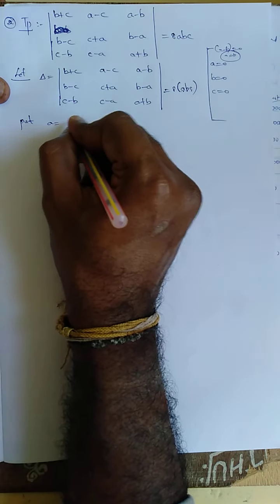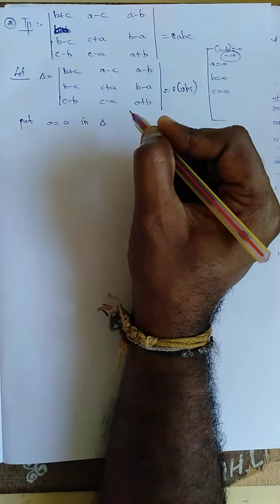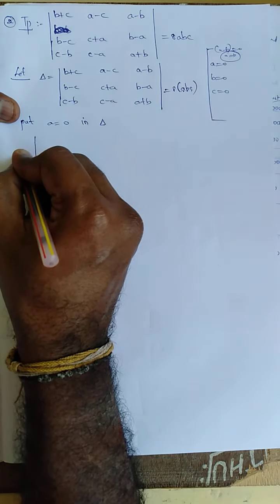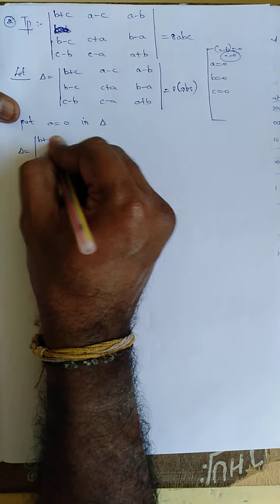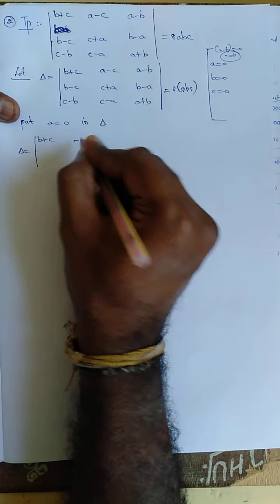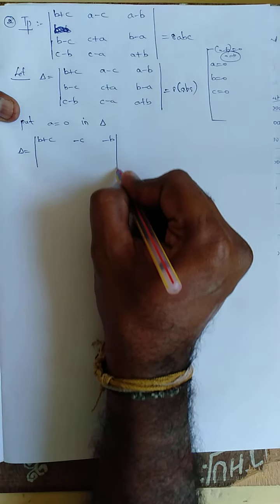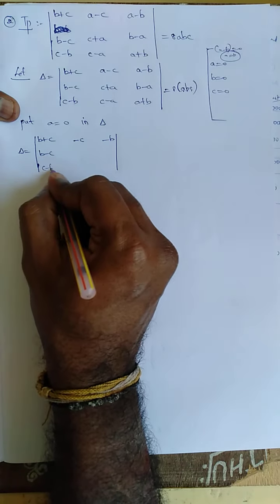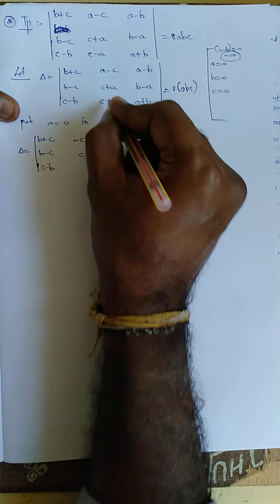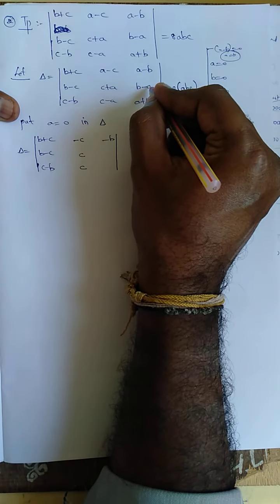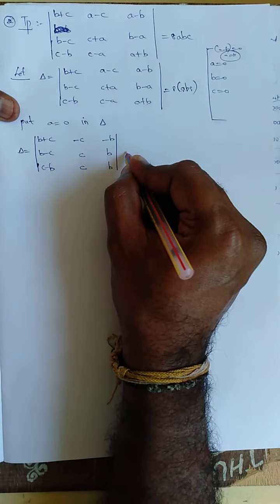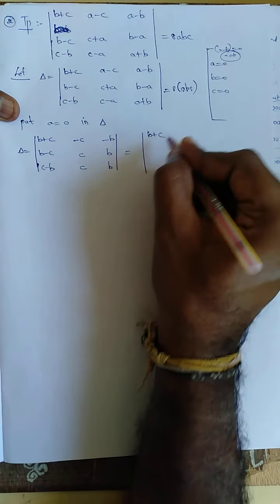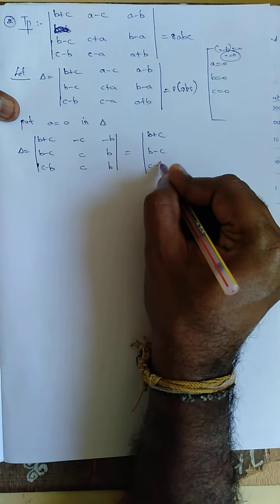Put a equal to 0 in del. So del becomes: (b+c, -c, -b / b-c, c-b, 0 / 0, 0, b). Here a is 0 throughout, so the relevant terms simplify accordingly.